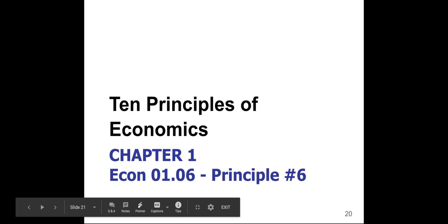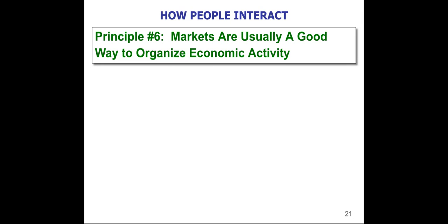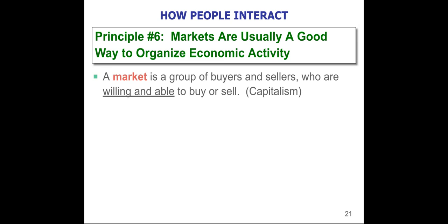We are on principle number six: markets are usually a good way to organize economic activity. In a free market, we believe that markets — made up of suppliers and demanders — come together, and that is the best way to distribute goods and services to people. A market is just a group of buyers and sellers; the buyers create the demand and the sellers are the ones producing and selling to the buyers.